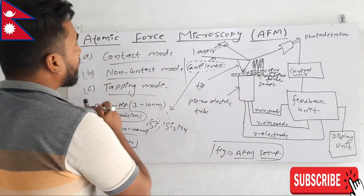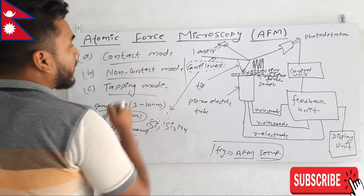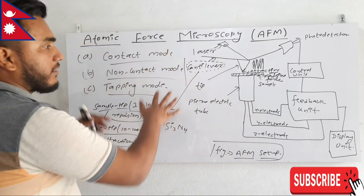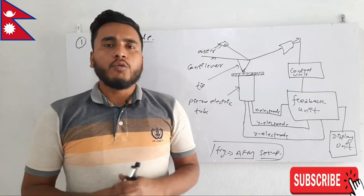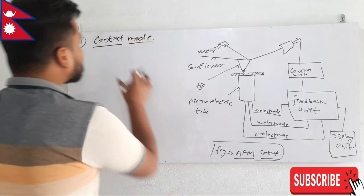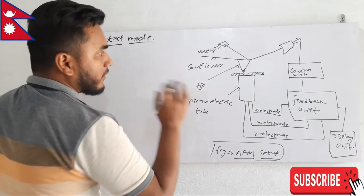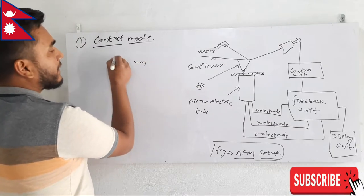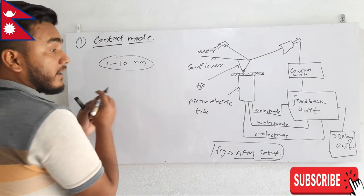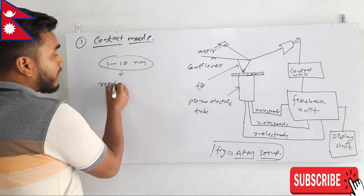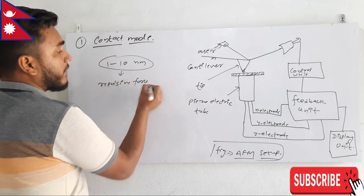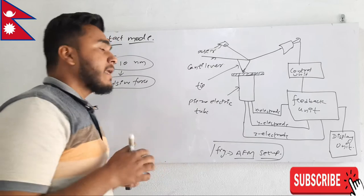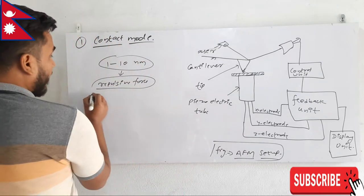Now let us see about contact mode. In contact mode, the tip and sample distance is roughly between 1 to 10 nanometers — they are very close to each other — and due to the closeness there will be repulsive force between them. Contact mode can be executed in two different ways: the first is constant height mode, and the second is constant force mode.